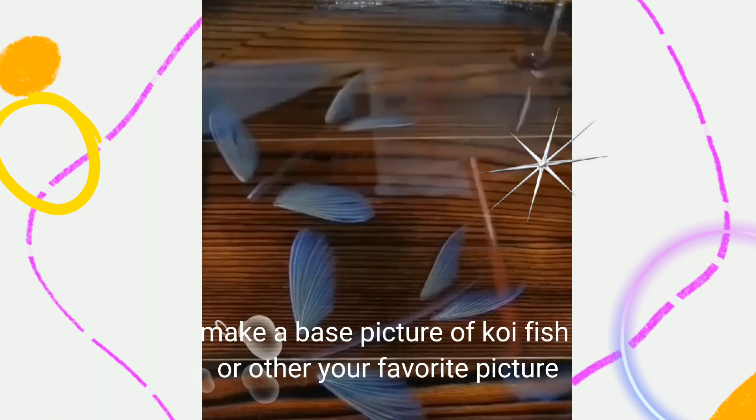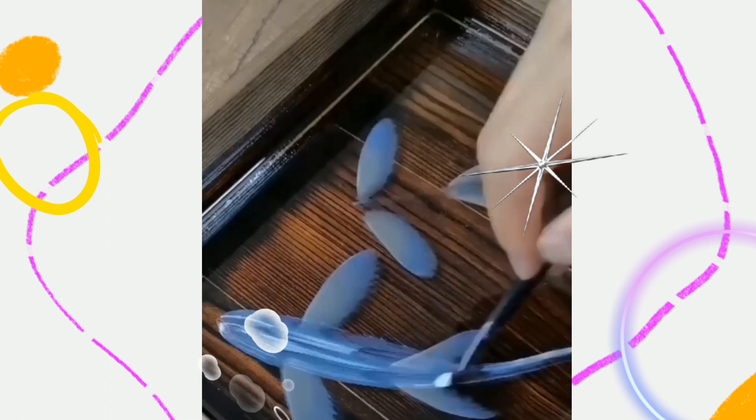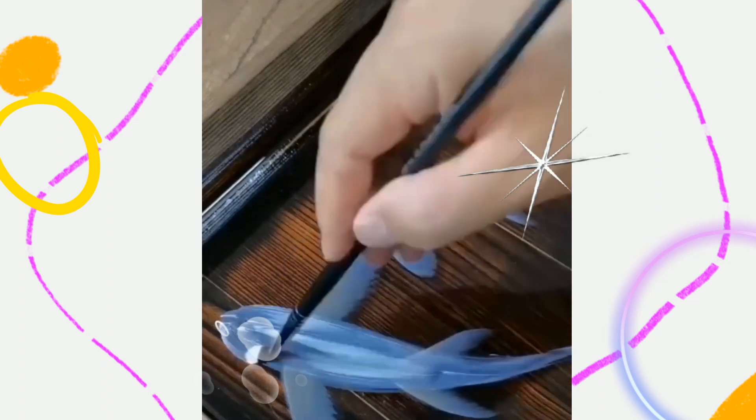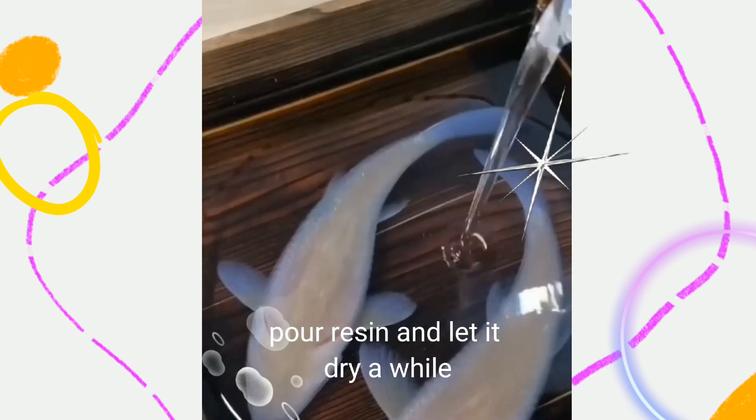Make a base picture of koi fish or other your favorite picture. Pour resin and let it dry a while.